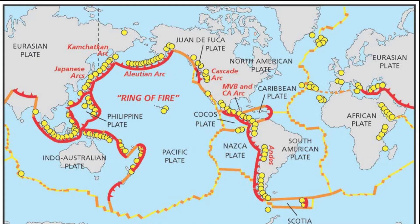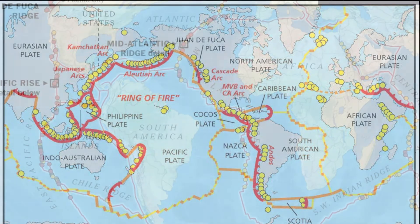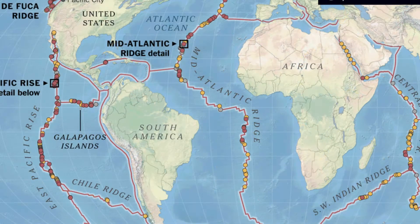The Mid-Atlantic Ridge spans the length of the Atlantic Ocean floor and marks a significant tectonic boundary where the North American plate and the Eurasian plate diverge. The South American plate and the African plate are also diverging from each other along the Mid-Atlantic Ridge.